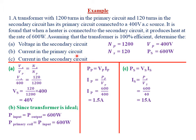For part C, we need the current in the secondary circuit. Using power equals voltage times current: current in the secondary coil equals power in the secondary coil divided by voltage in the secondary coil. Power in the secondary coil is 600 watts, and the voltage in the secondary coil was computed in part A as 40 volts. So 600 divided by 40 gives the current in the secondary coil as 15 amperes.